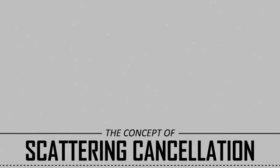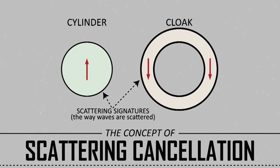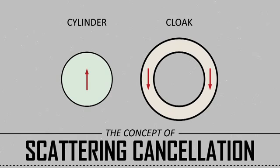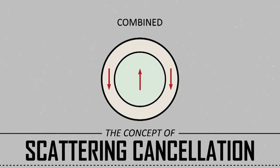The metamaterial cloak is manufactured so that its scattering signature, the way it scatters waves, is the exact opposite of the cylinder inside. The technique works using what we call a scattering cancellation phenomenon. When the two are combined together the visibility of the object is completely cancelled, it's zero. It's kind of a compensation between what the object would do and what the metamaterial would do. When you combine the two you cancel the scattering.